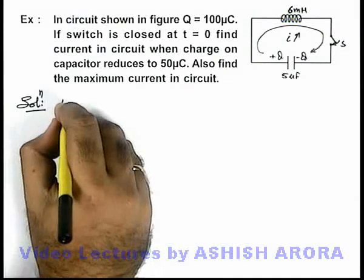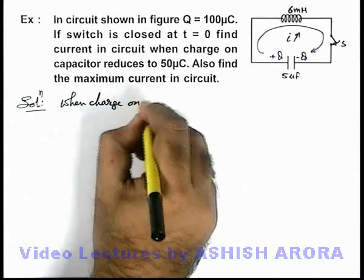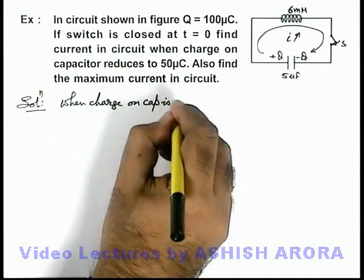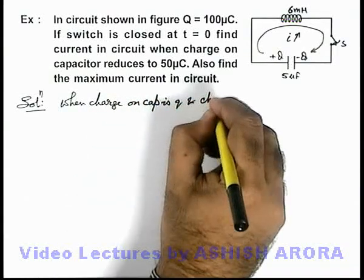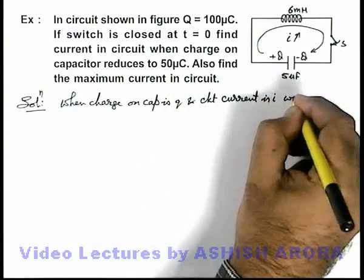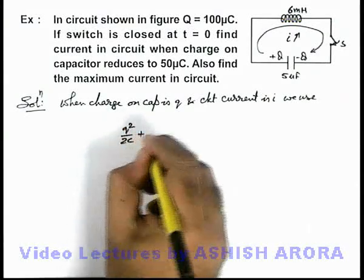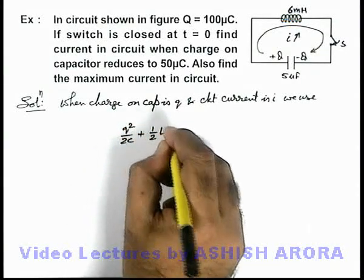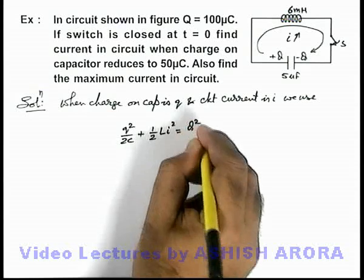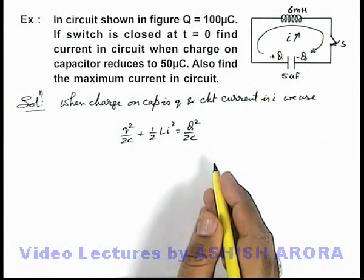So we can write when charge on capacitor is q and circuit current is i, we can write q²/2C + ½Li² = Q²/2C, which is initial energy and that remains constant.